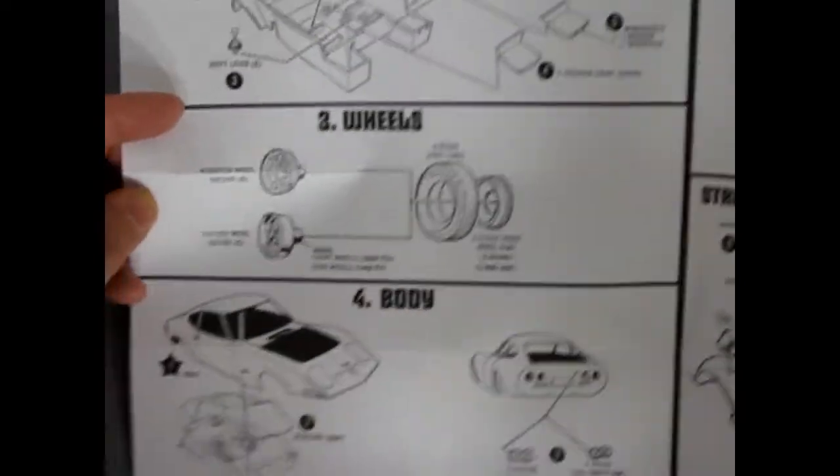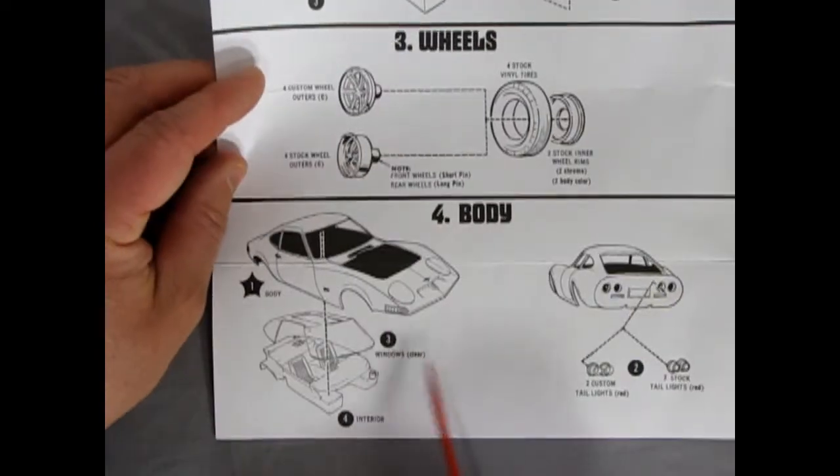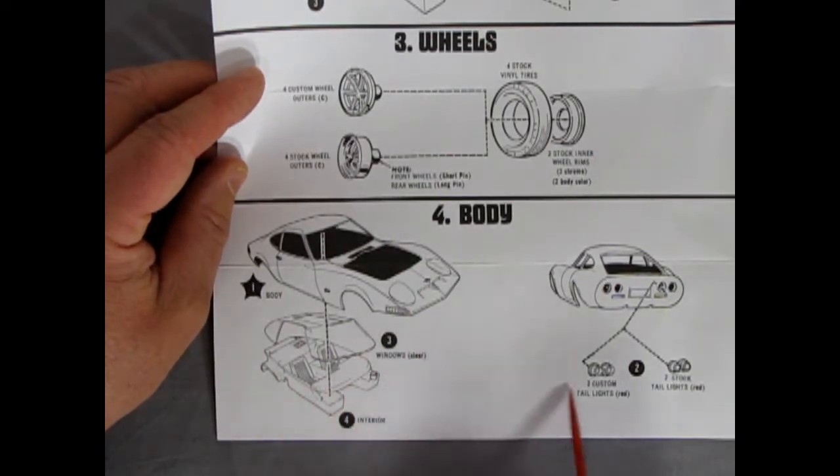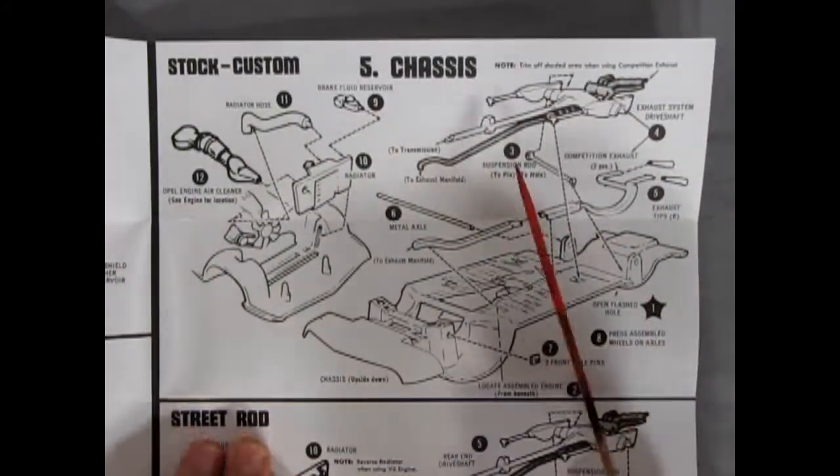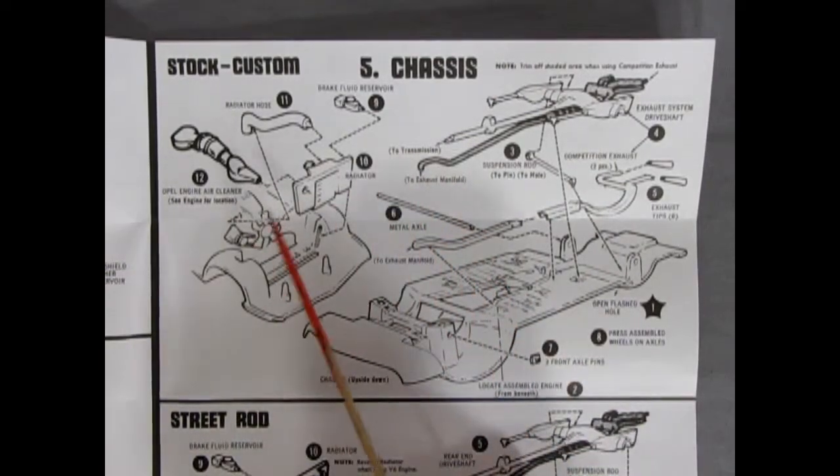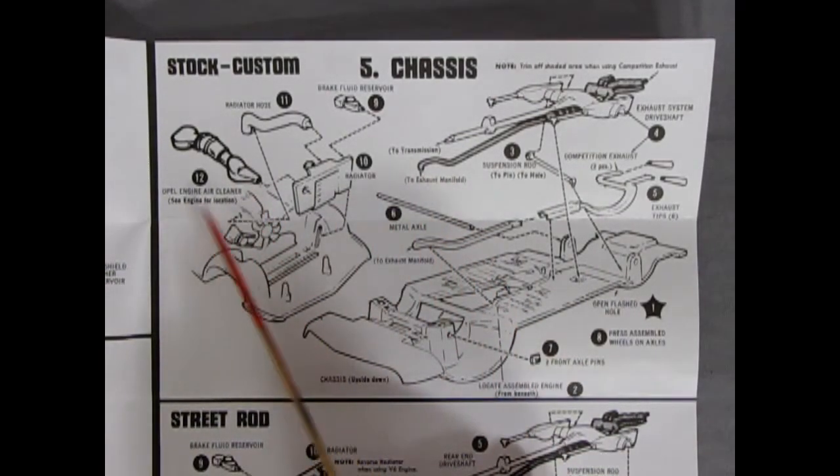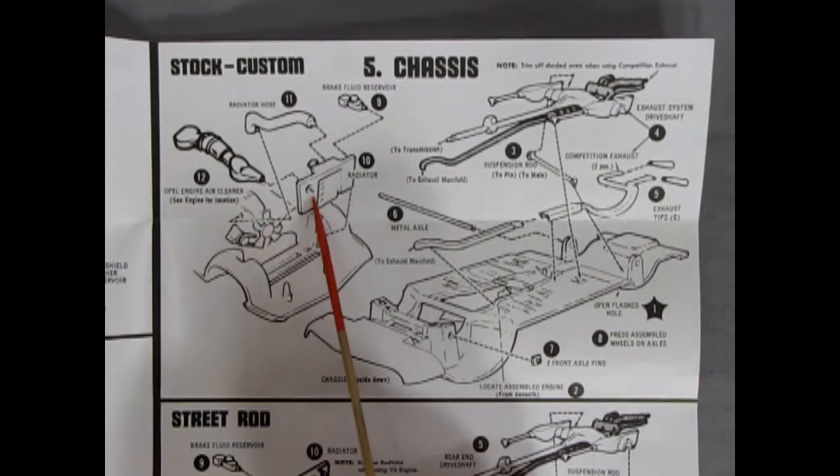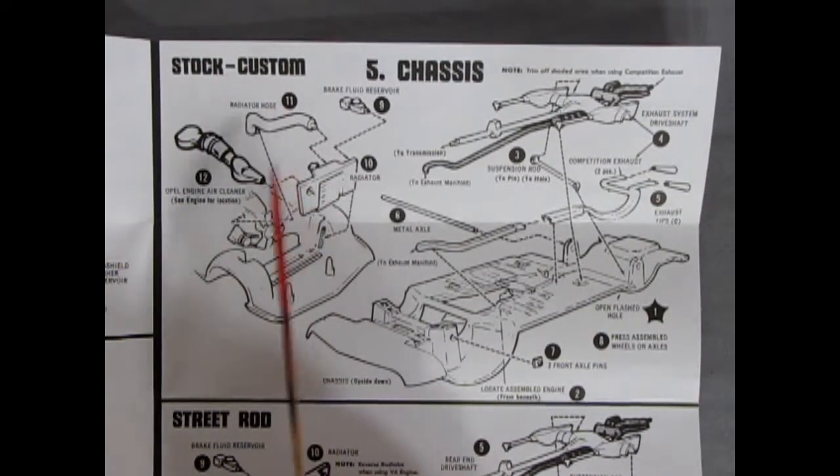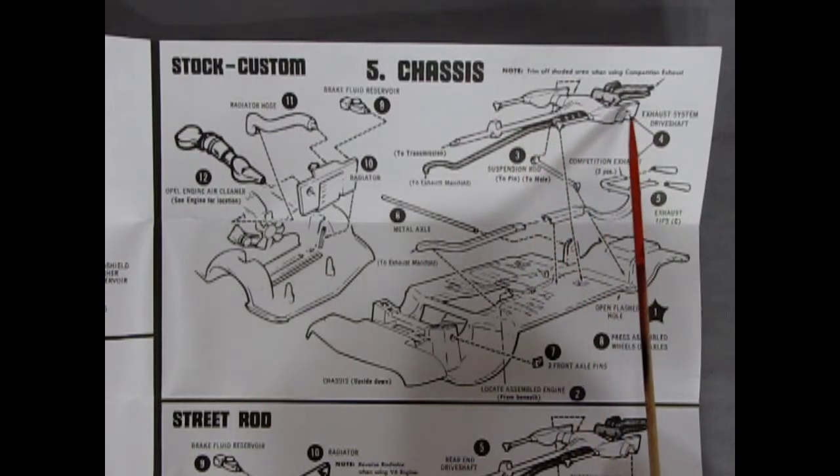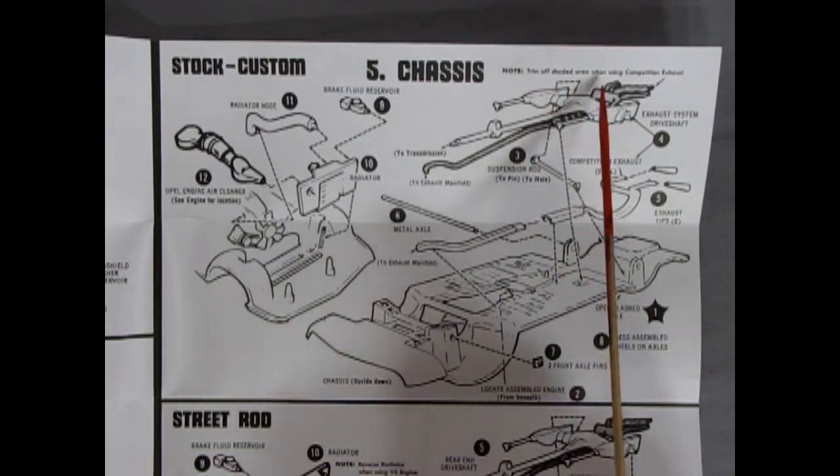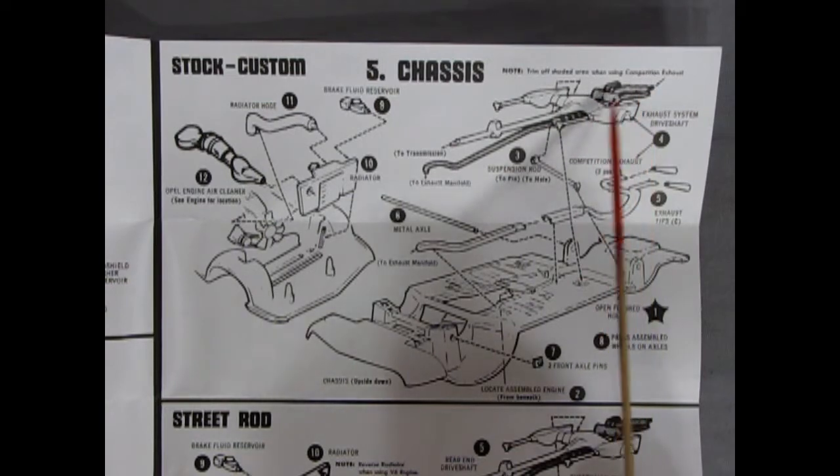And then we get into the body section here. With the windows body and the interior completed popping together. And then you pop in your two tail lights into the back. And then we're getting into our stock and custom chassis over here in step five. So here your engine air cleaner is going to glue into the... actually goes through a hole here on the firewall. The radiator molded in. Radiator hose. The brake fluid reservoir.